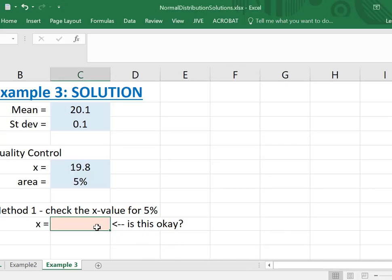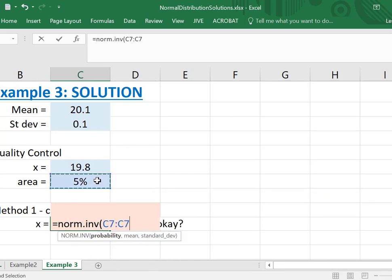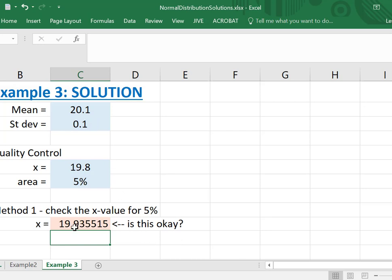So in Excel, we use the norm.inv, grab that 5%, the 20.1 for the mean, the 0.1 for the standard deviation. And that gives us 19.9355. Now is this okay? Let's have a look.